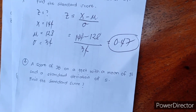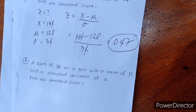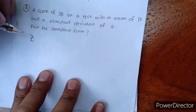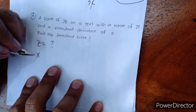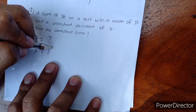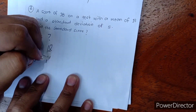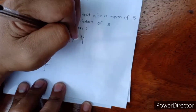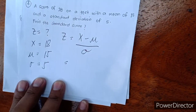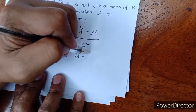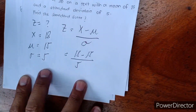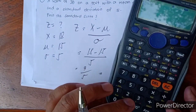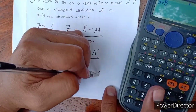Example number four: a score of 18 on a test with a mean of 15 and a standard deviation of 5 — find the standard score. We are looking for Z. Our raw score X is 18, mean is 15, and standard deviation is 5. Z equals 18 minus 15 all over 5. That is 3 divided by 5, which equals 0.6.